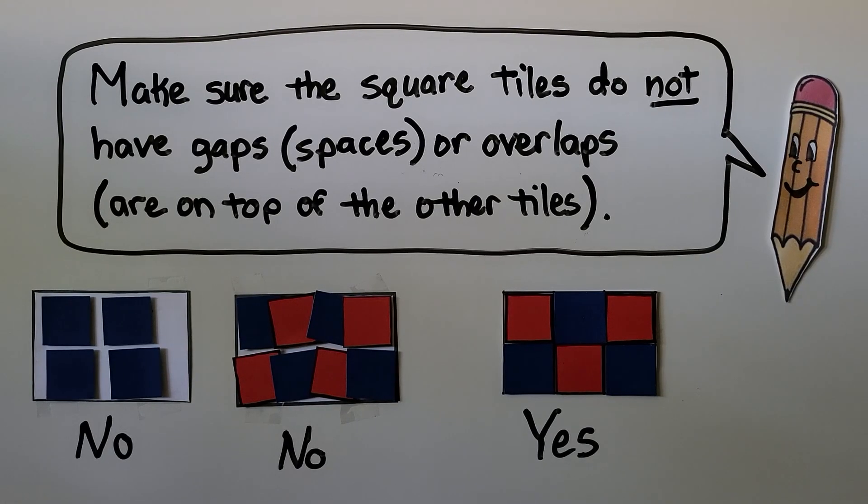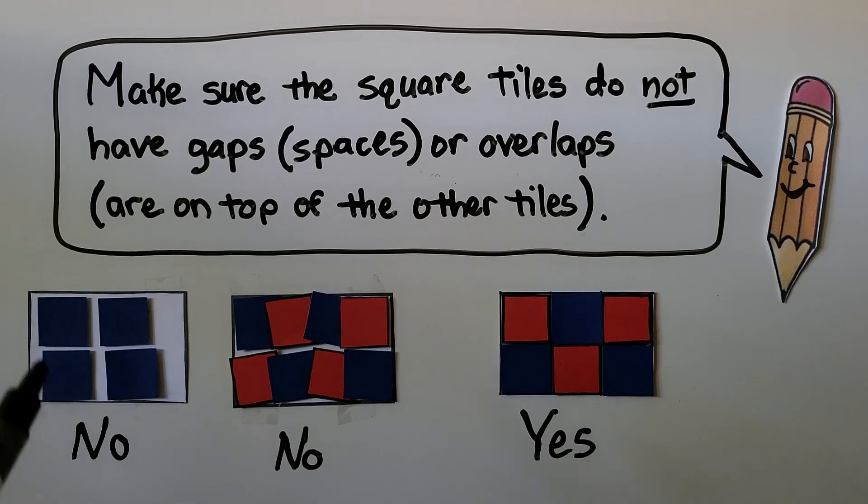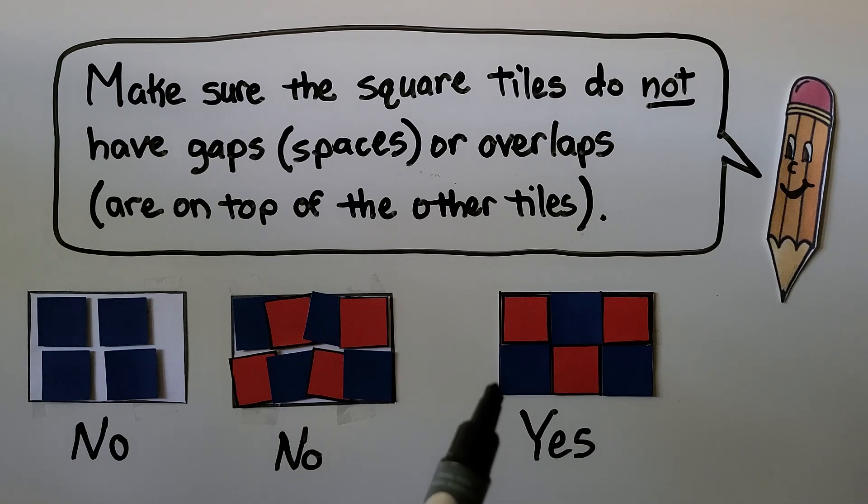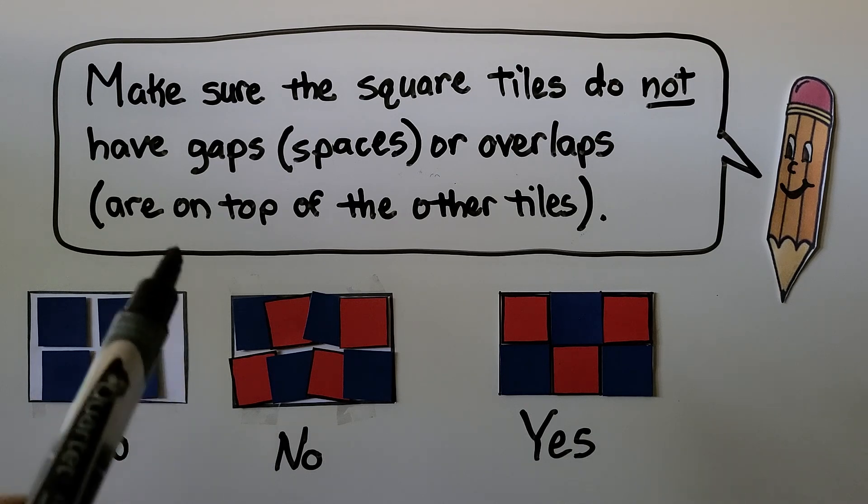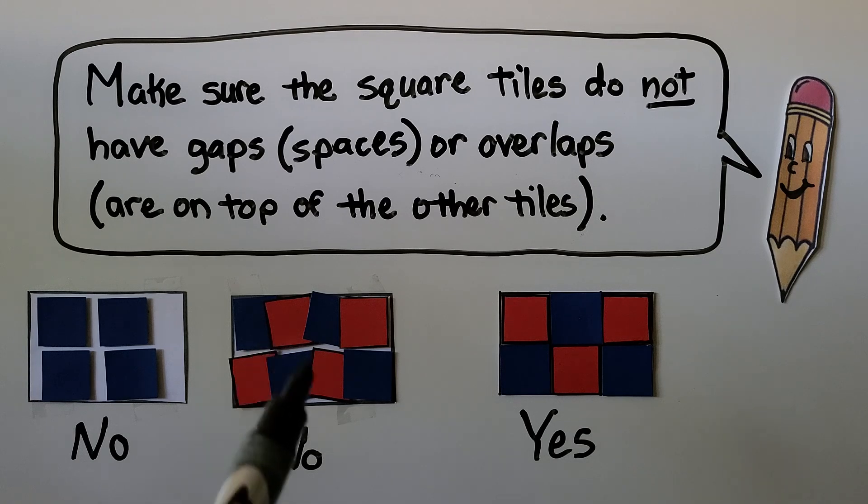We make sure the square tiles do not have gaps. That means spaces. Or overlaps. That means they're on top of the other tiles. So you want it to be nice and neat like this. We could fit more square tiles here. There's too many big spaces that are left open, aren't there? And these are on top of each other. That's too many. So we want to make sure we do it nice and neat with no gaps and no overlaps.